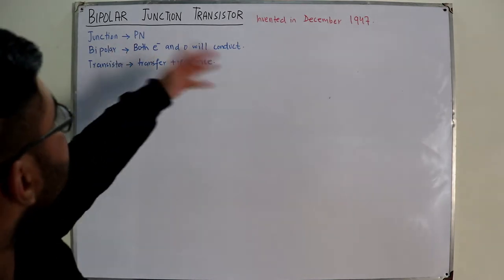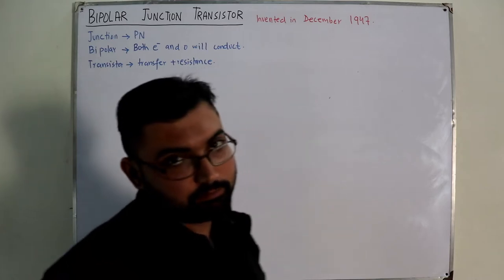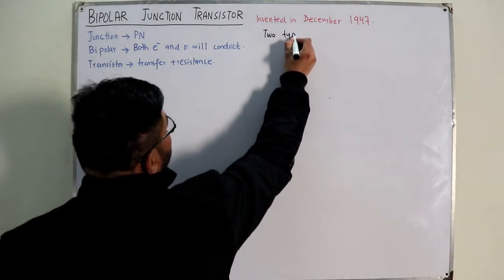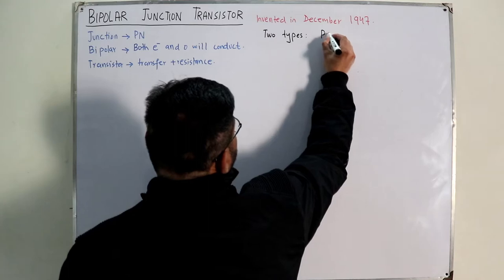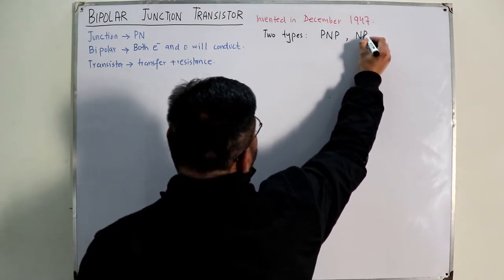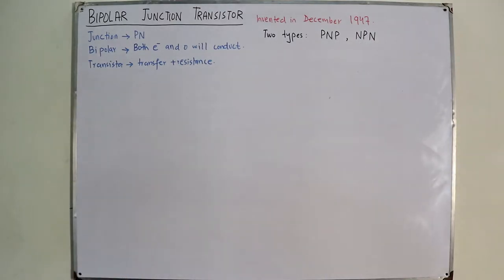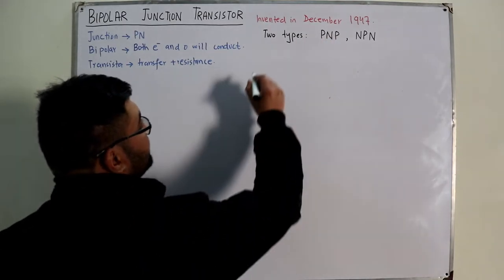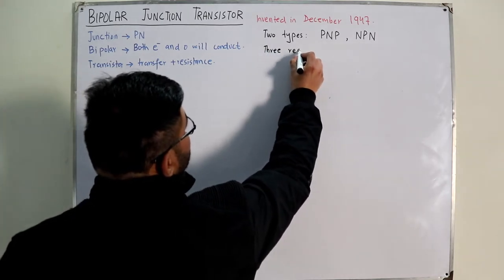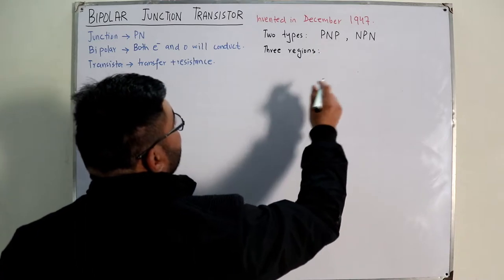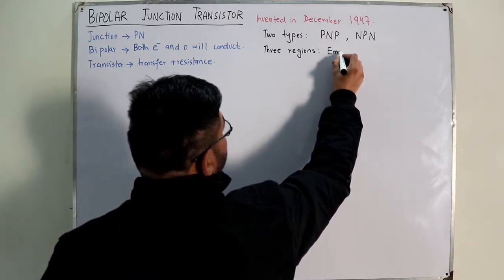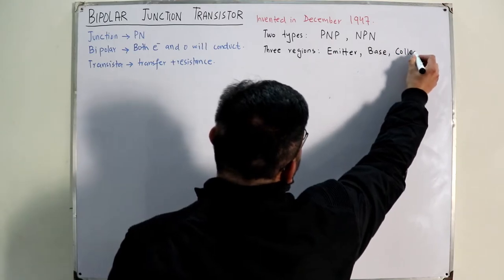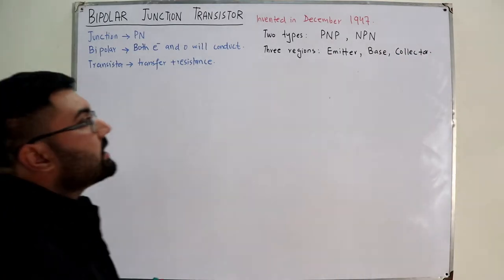There are two types of bipolar junction transistors based on construction: PNP and NPN transistors. From the naming, you can see there are three regions in a BJT. Those three regions are the emitter, the base, and the collector - each with its own terminal.